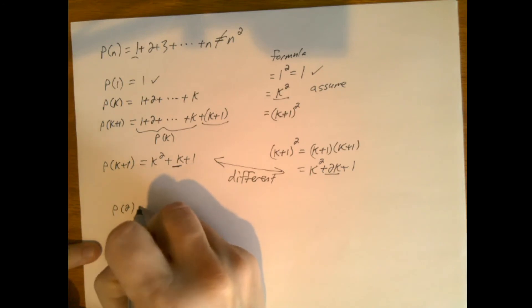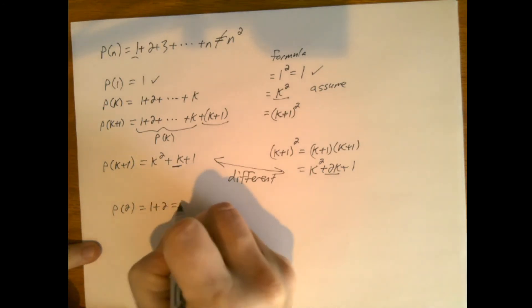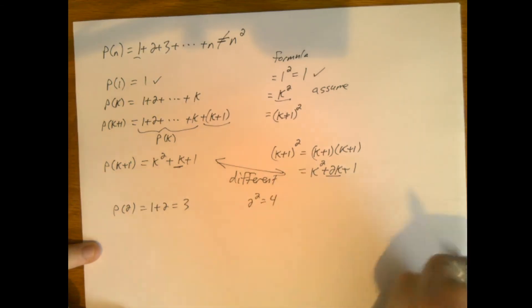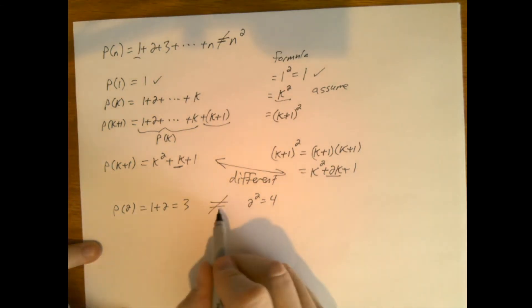What's P(2)? P(2) is equal to 1 plus 2 is equal to 3. 2 squared is 4. So it's already broken.